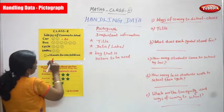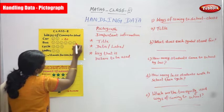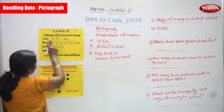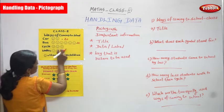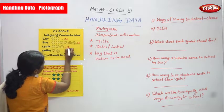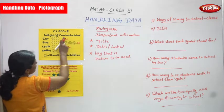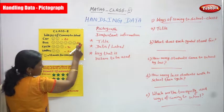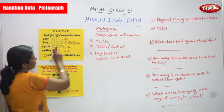By bus: one, two, three, four, five, six smileys — each smiley represents 10 children, so that is 60 children. By cycle: three smileys, each stands for 10 children, so 30 children. By walking: two smileys, so 20 children. Total: 20 plus 60 is 80, plus 30 is 110, plus 20 is 130 children.